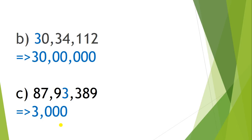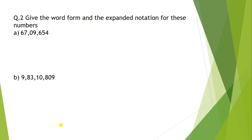Let's take the next question. Give the word form and the expanded notation for these numbers. The first number is 67,09,654.